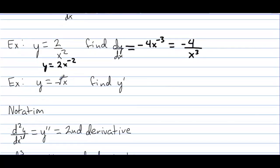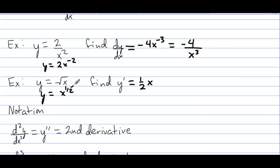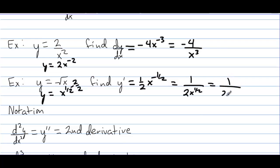In the next example, we wouldn't leave it as the square root of x to take the derivative. We would write it as x to the 1/2 power, then take the derivative. So y prime would be 1/2 x to the negative 1/2 — we subtract 2/2 from 1/2. That's equal to 1 over 2x to the 1/2, since the negative power goes to the denominator. The final answer is 1 over 2 times the square root of x.